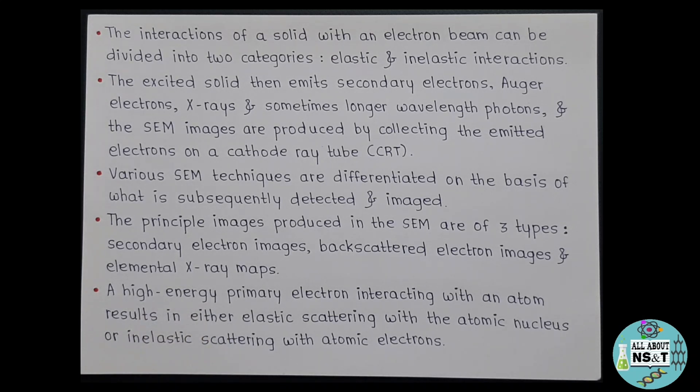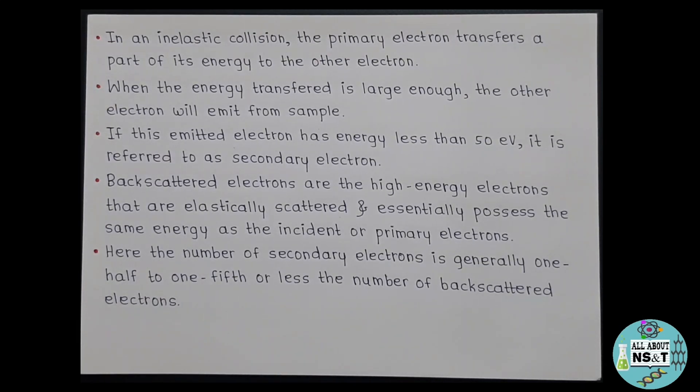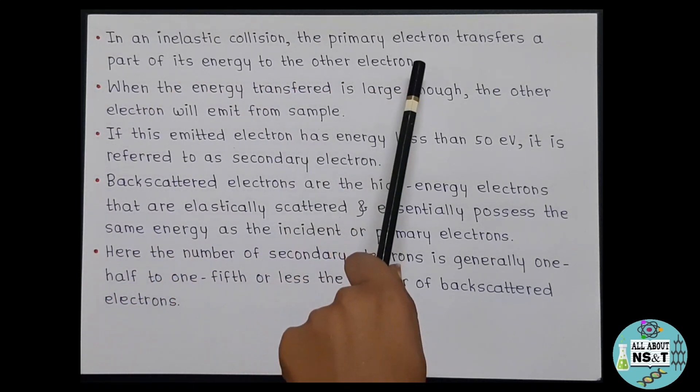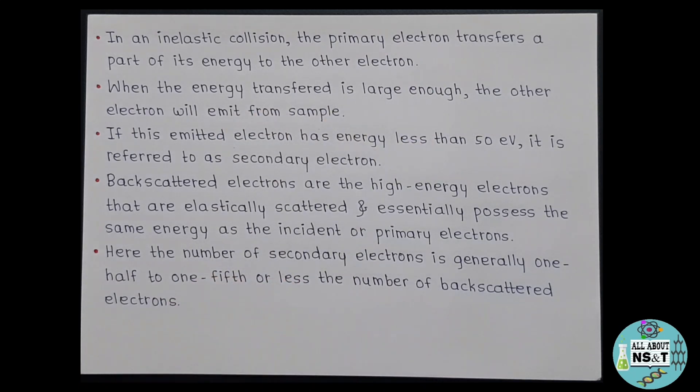Okay, now high energy primary electron interacting with an atom results in either elastic scattering with the atomic nucleus or inelastic scattering with the atomic electrons. So as we have discussed earlier, in an inelastic collision, the primary electron transfers a part of its energy to the other electron. When the energy transferred is large enough, the other electron will emit from sample. If this emitted electron has energy less than 50 electron volts, it is referred to as secondary electrons. The backscattered electrons are the high energy electrons that are elastically scattered and essentially possess the same energy as the incident or primary electrons. Here the number of secondary electrons is generally one half to one fifth or less the number of backscattered electrons.